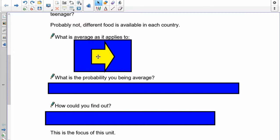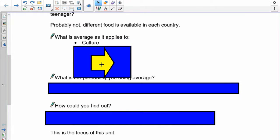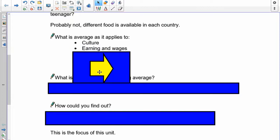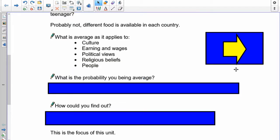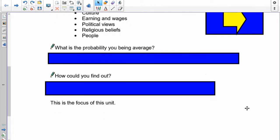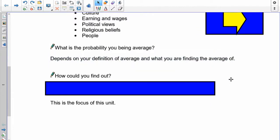Because the country that you're in has its own cuisine, and you probably grew up eating it. So that would make the teenager in Canada probably want to have burgers and fries, and an average Mexican teenager may want tacos or something like that nature. So, probably not. So what is average? Average applies to many different things. The first thing you could talk about is what is average applies to culture. What does it mean when you're an average in your culture? What about average earnings and wages? Political views, religious beliefs, and of course average people. So what's the probability of you being average? Well, that depends on your definition and what you're finding the average of in terms of your topic.